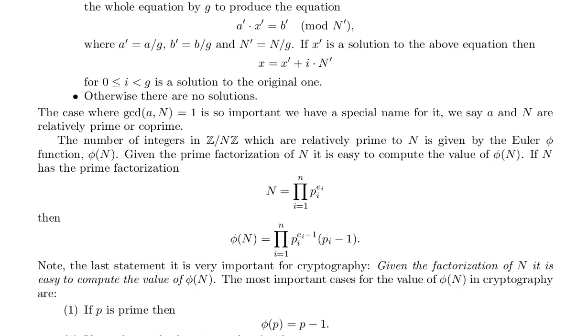The case where the greatest common divisor of a and n equals 1 is so important we have a special name for it. We say a and n are relatively prime or co-prime. The number of integers in Z mod nZ which are relatively prime to n is given by the Euler phi function phi of n.